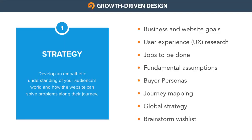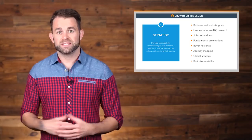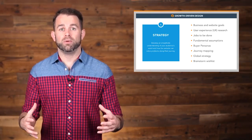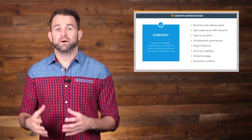The next step is called Jobs To Be Done. This framework helps you identify the underlying needs and desired outcomes that drive your audience and what it takes for them to switch to your company's products and services as a solution. Following the jobs to be done, you'll refine those into fundamental assumptions. This step involves boiling down what you already know about your market, about your business, and about your website.